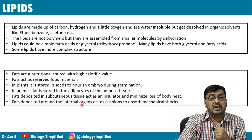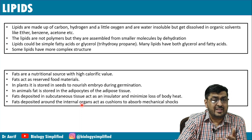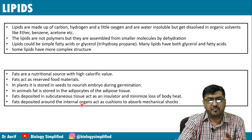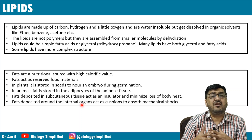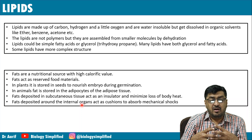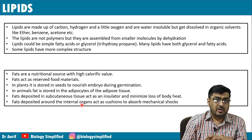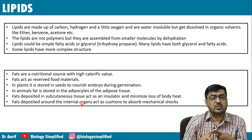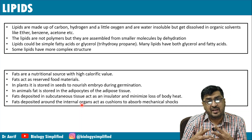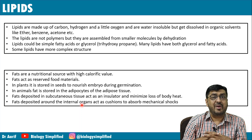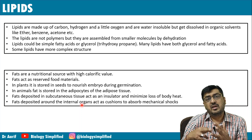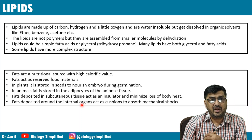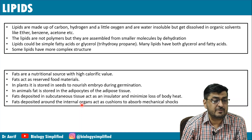Fat deposited around internal organs — the visceral organs like kidney and liver — forms a small surrounding layer that acts as a cushion to absorb mechanical shock. So fat serves as an insulator, prevents loss of heat, acts as a shock-absorbing pad, is a calorie-rich food, and is a reserve food material — stored in endosperm in plants and in adipocytes in animals.